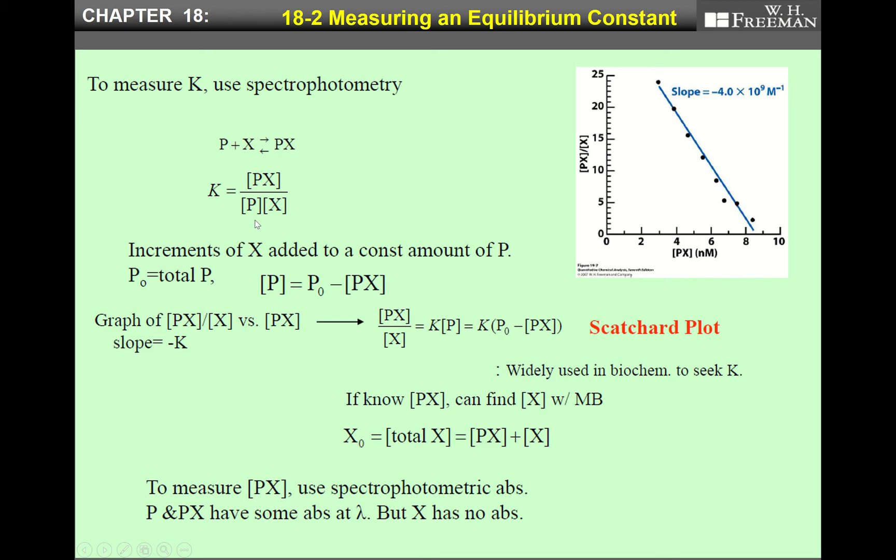Let's consider the first case and assume the chemical reaction P plus X becomes PX. Our purpose is to measure the equilibrium constant K, which by definition is given by K equals [PX] divided by [P][X]. The experiment is usually done by adding small portions of X little by little to the solution of P, which remains constant. P₀ is total P, and after reacting with X, total P concentration becomes smaller by PX amount. So this equation holds: concentration of P equals P₀ minus concentration of PX.